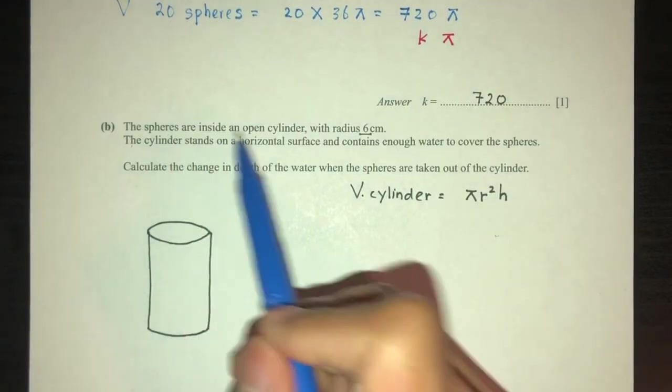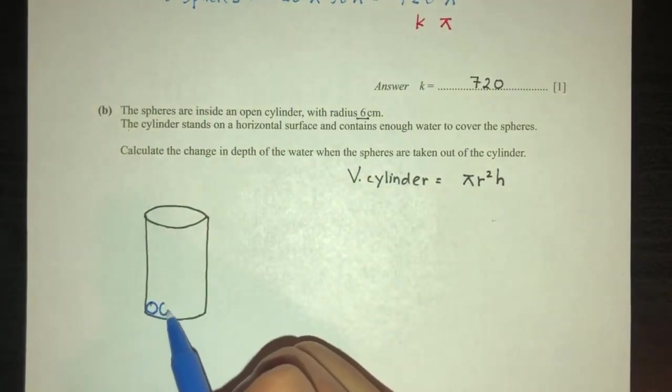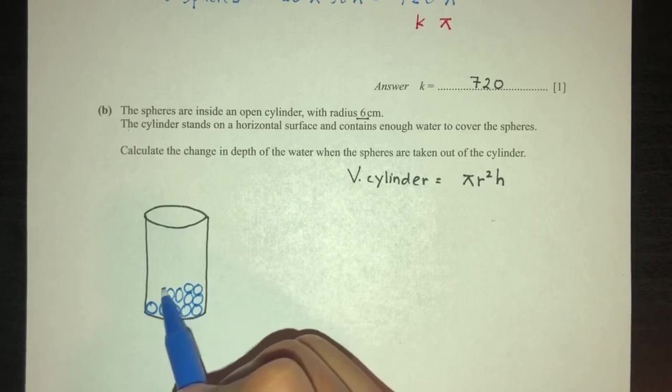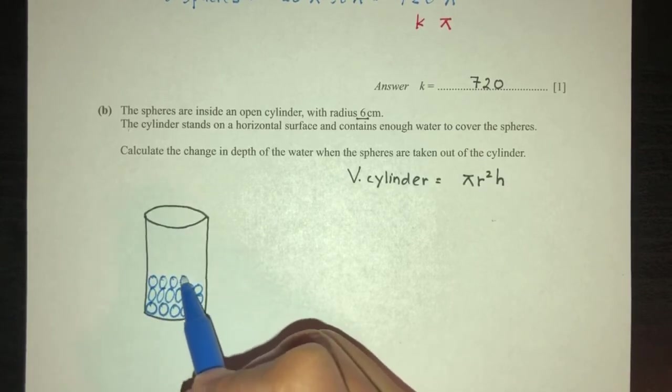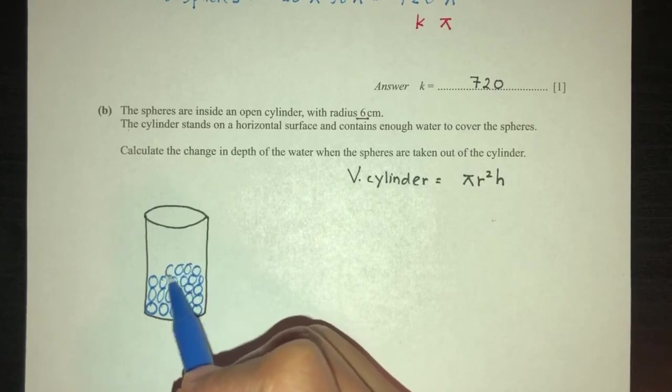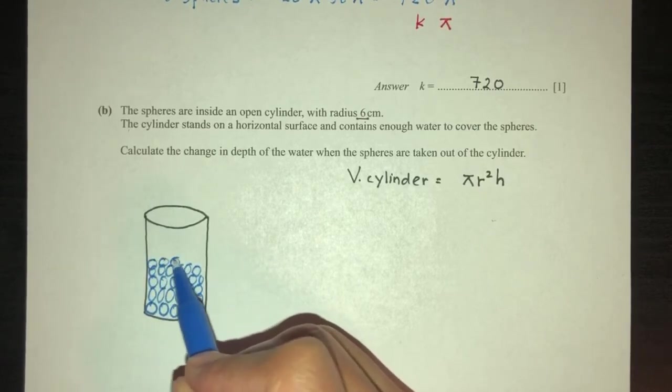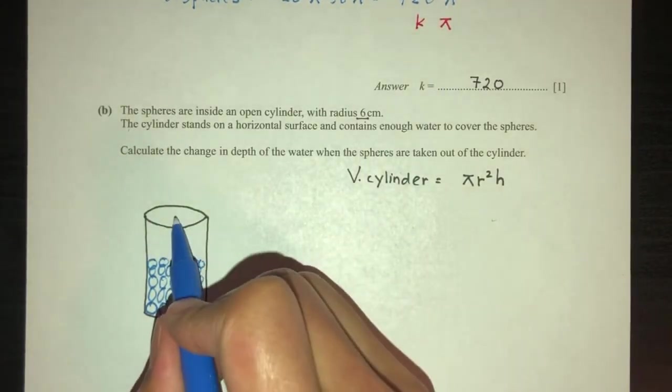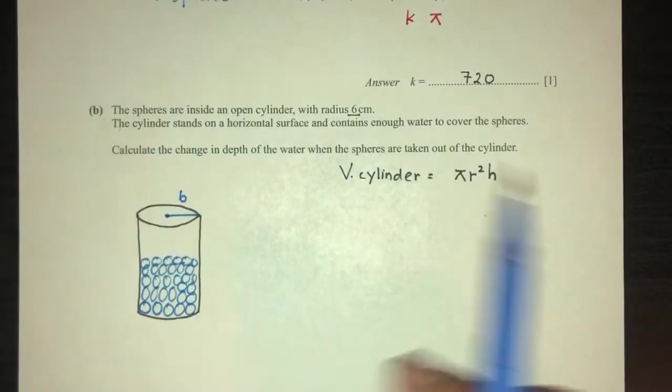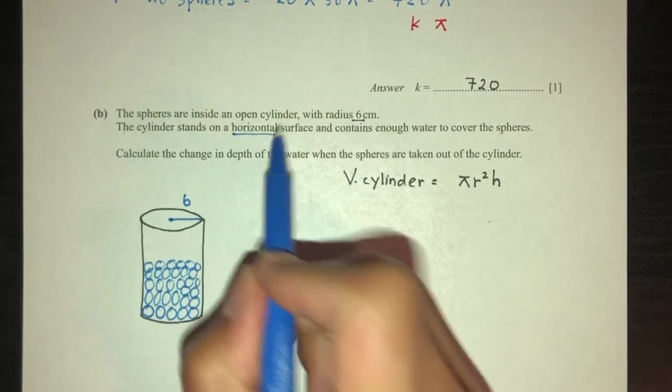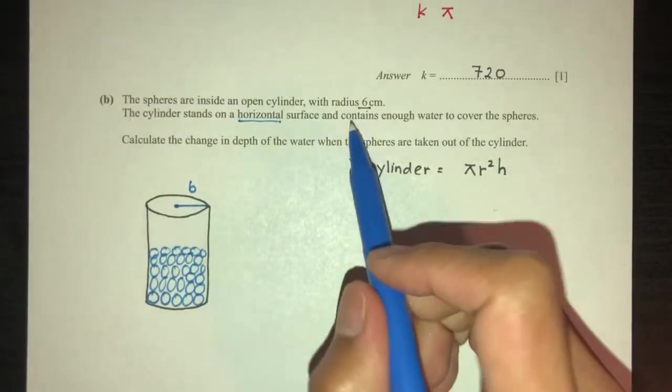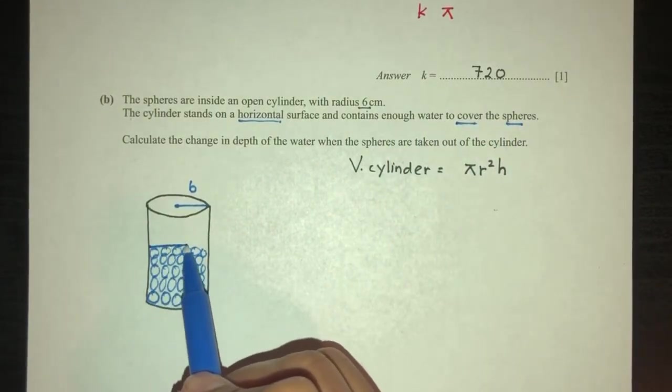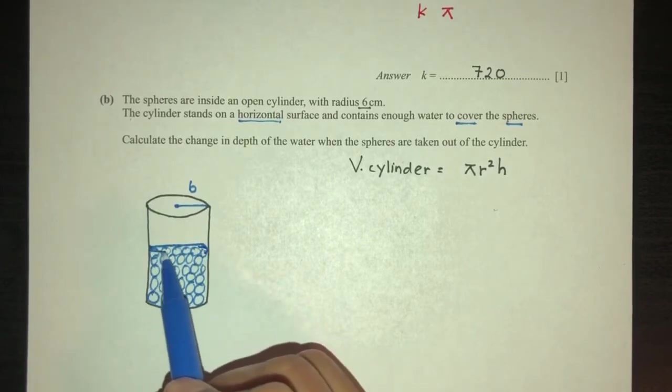Now, the spheres are inside of the cylinder. Let's say we have 20 spheres that are inside that cylinder, until about normal range. That is the spheres are inside the cylinder. The radius is 6. The cylinder stands on a horizontal surface, meaning it is on a flat surface. And contains water enough to cover the spheres. The water is right above the spheres.